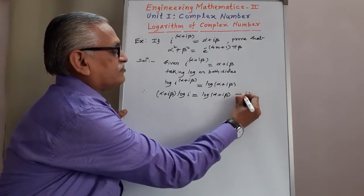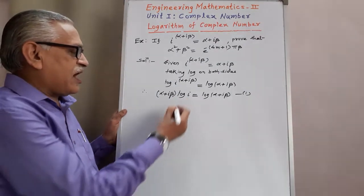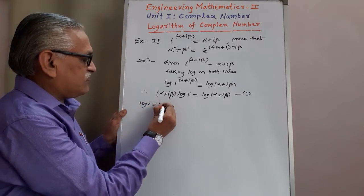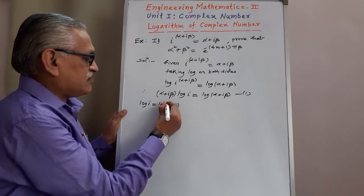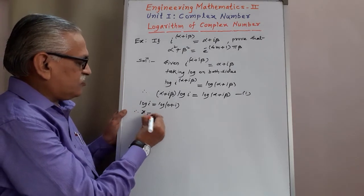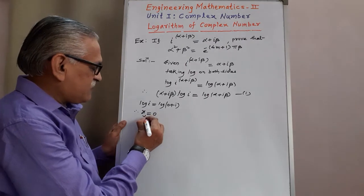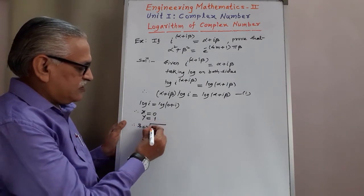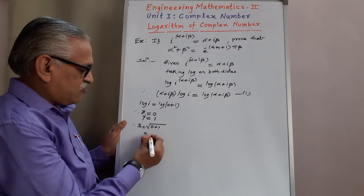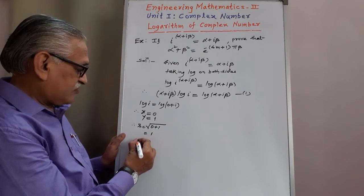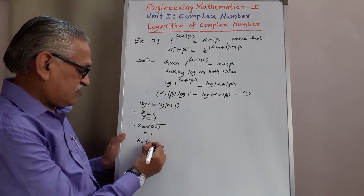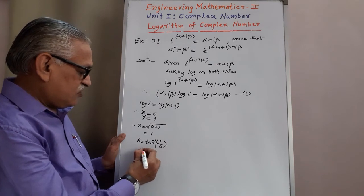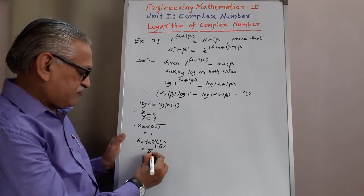We call this equation 1. And to find the value of log i, we can write log i as log of 0 plus i. Here, x is equal to 0, real part is 0, imaginary part y is 1, and therefore r is equal to root of x square plus y square, which gives root of 1 as 1. And theta is equal to tan inverse of y by x; y is 1, x is 0, so 1 by 0 is infinity, and tan inverse of infinity is pi by 2.